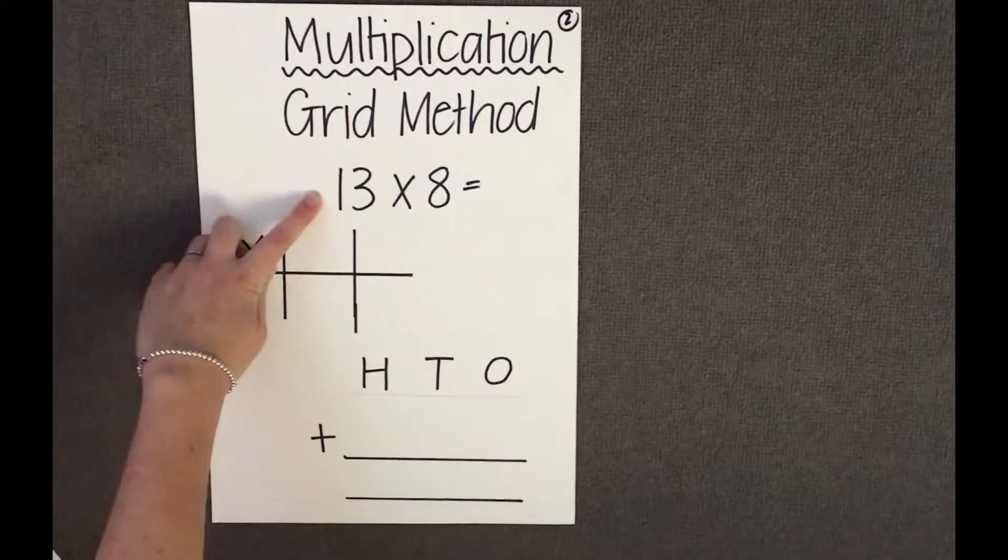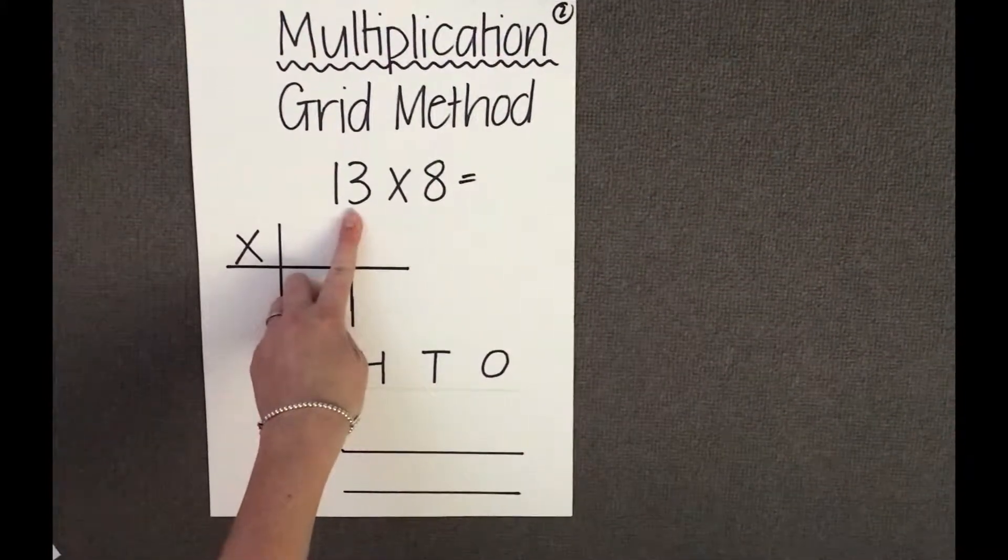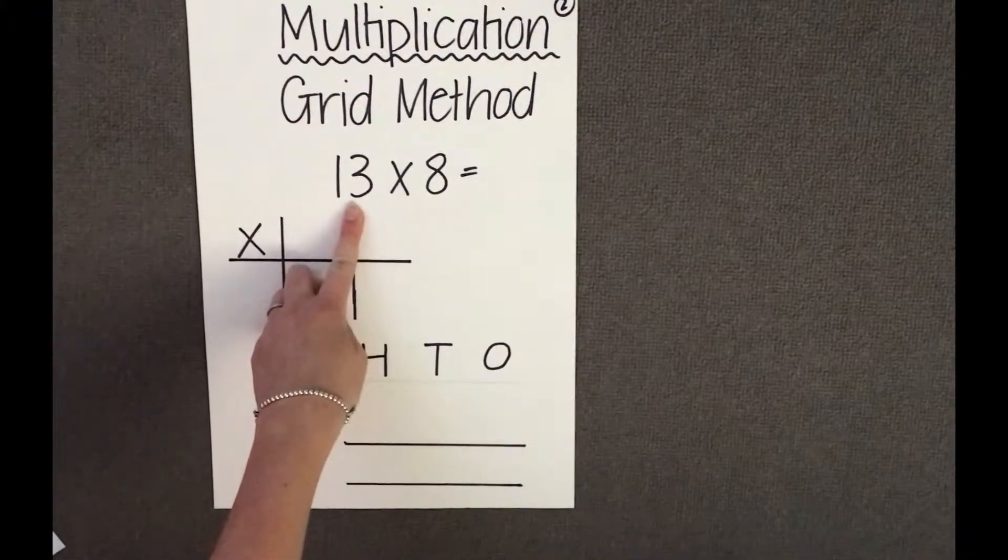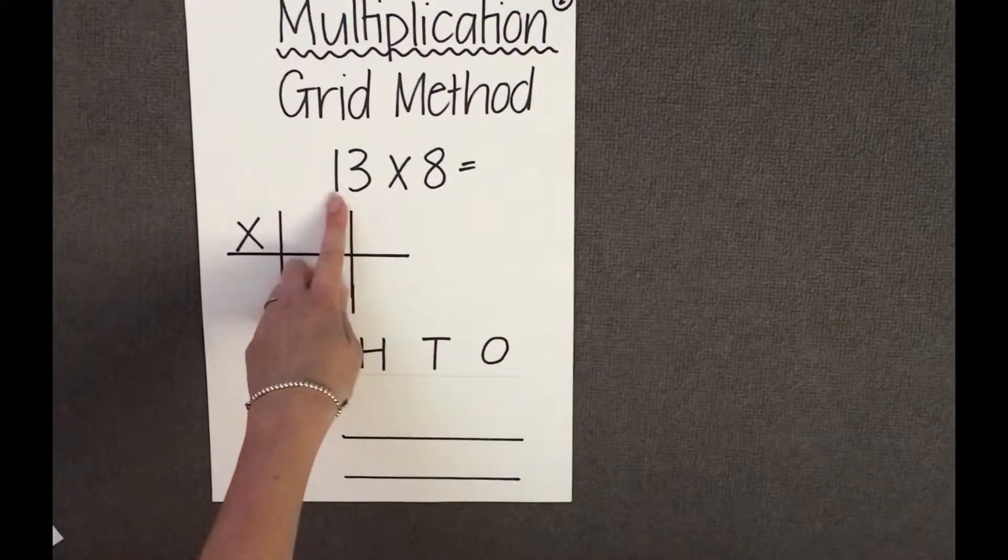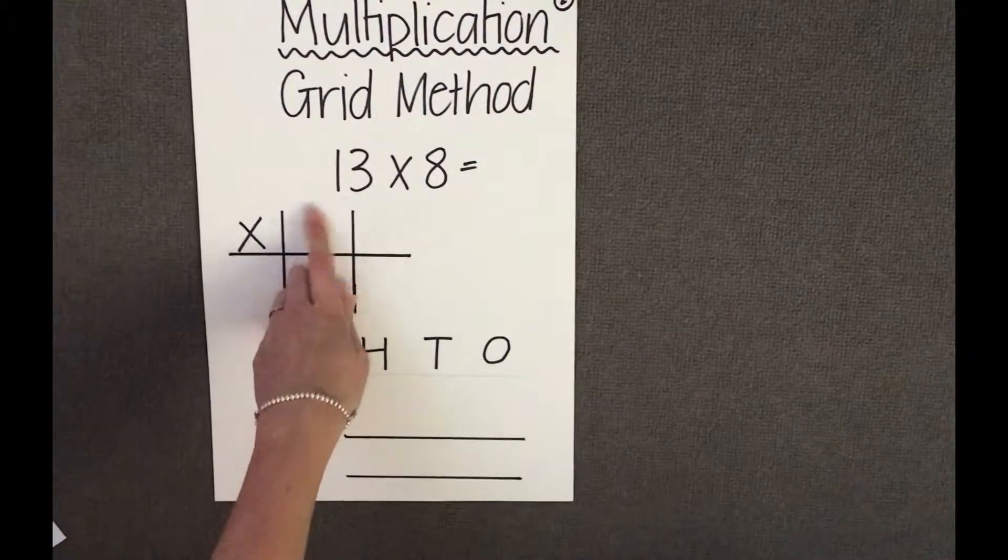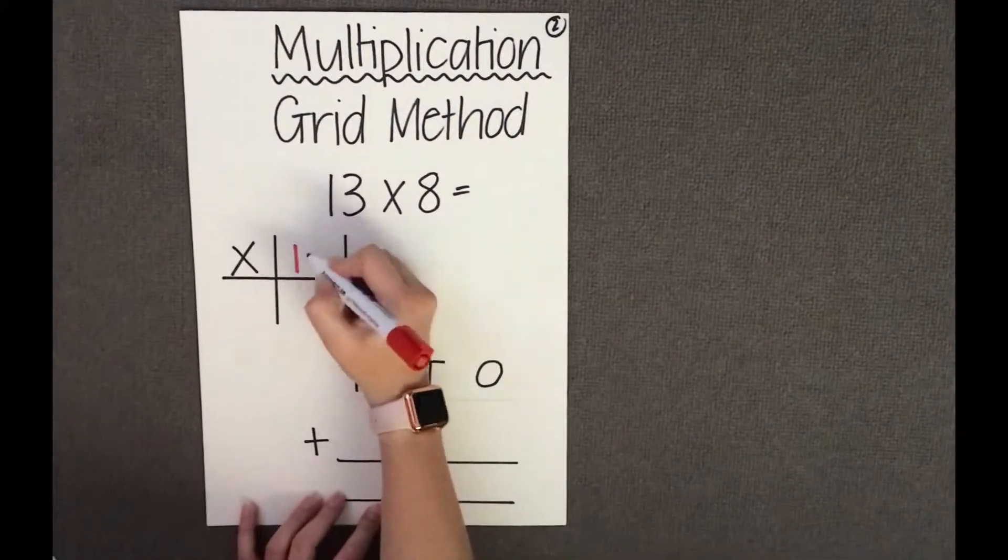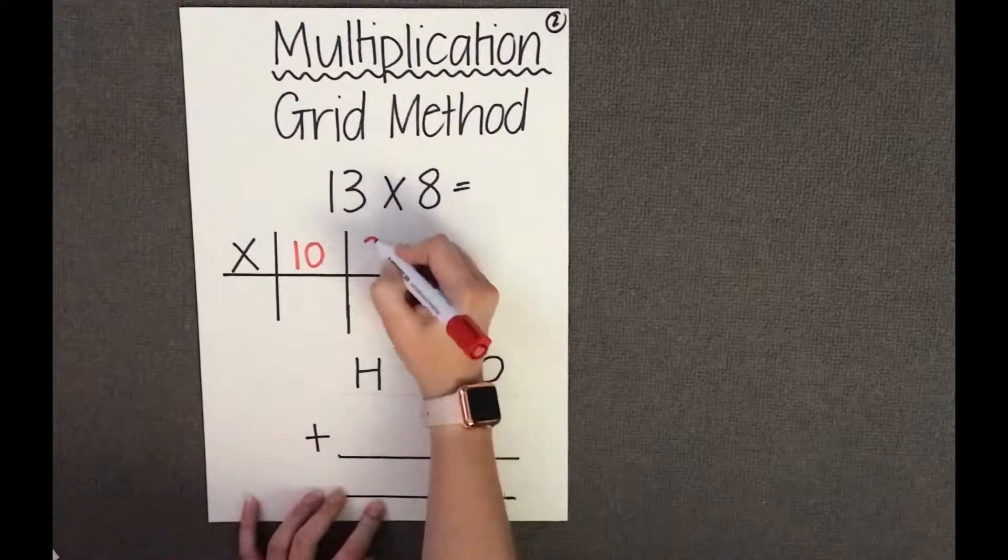First we need to partition our two digit number 13 into its tens and its ones. In the number 13 we have one ten and three ones which we need to use to complete our grid. So we have one ten and we have three ones.